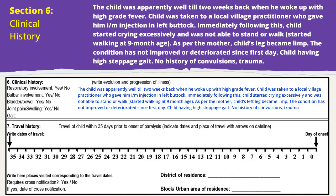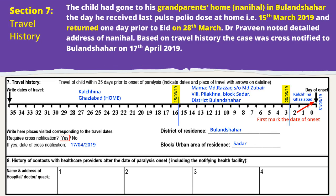Under Section 6, write the disease progression in 3–5 sentences and mention any relevant negative history. At the time of examination, assess the respiratory, bulbar, bladder, or bowel involvements. Joint pain or swelling and gait should also be assessed. Take complete travel history for all travels made by the patient during the incubation period and write the address in the CIF.